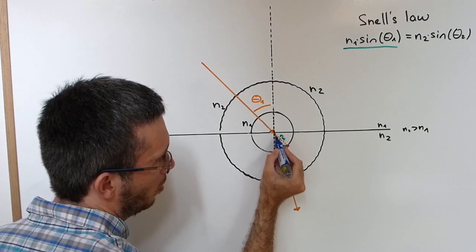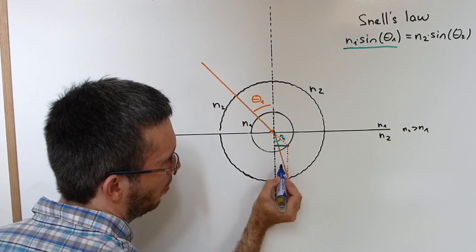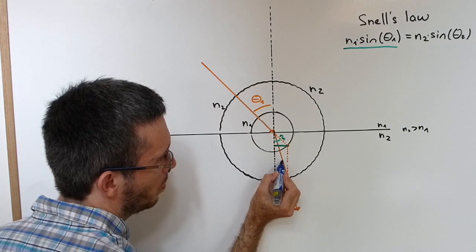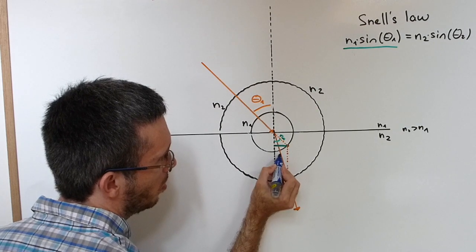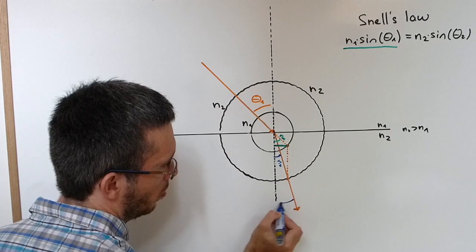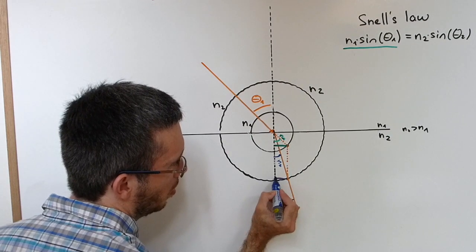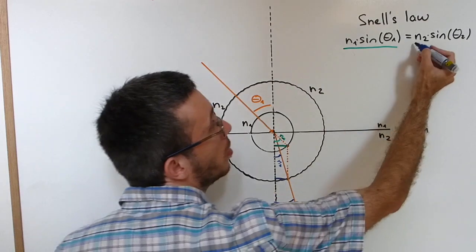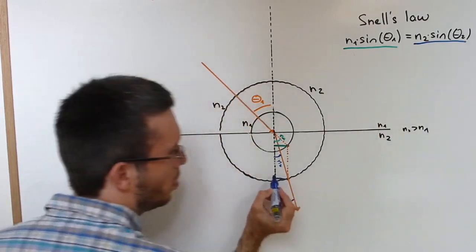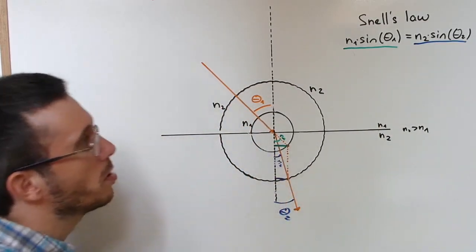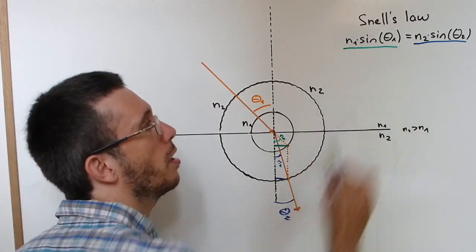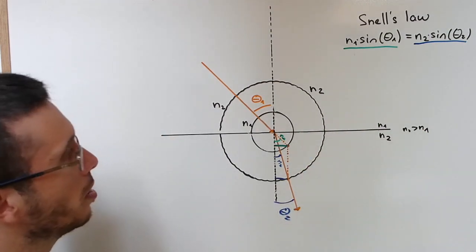What do I have here? Here I have my second radius which is my n2 times sin of theta2 gives me this distance here. And those two distances I made them equal. So basically I have just geometrically solved Snell's law.